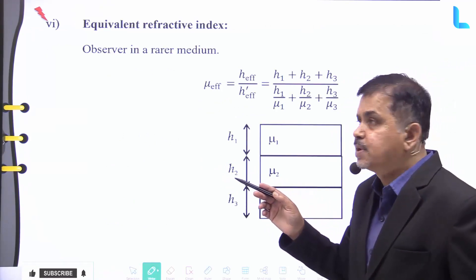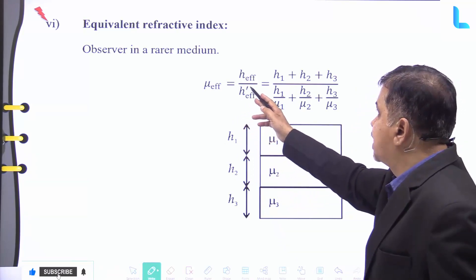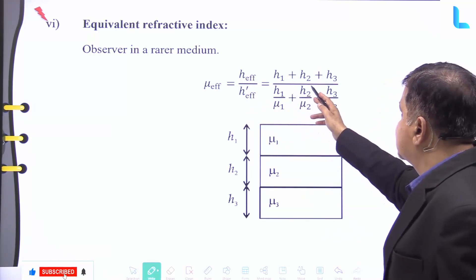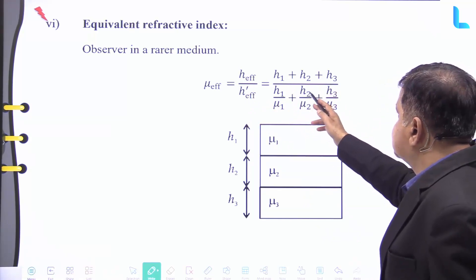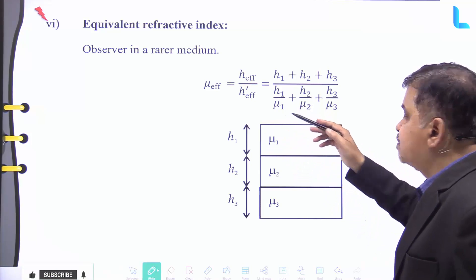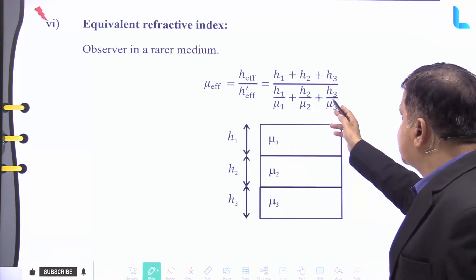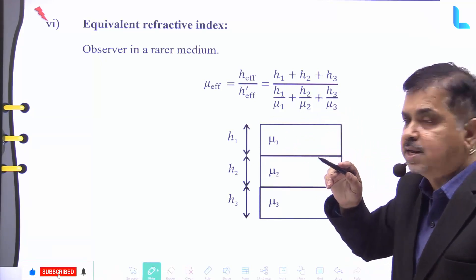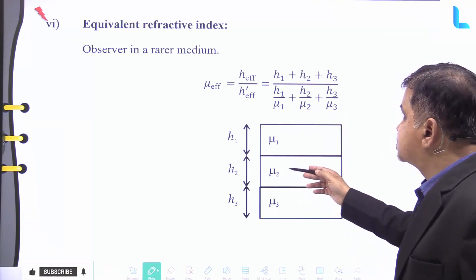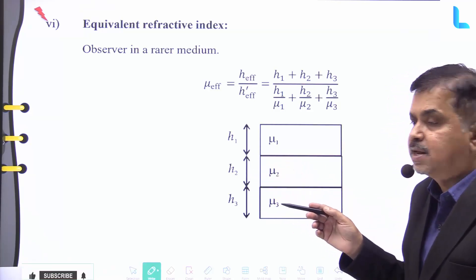The equivalent refractive index for an observer in the rarer medium is: μ_effective = (h₁ + h₂ + h₃) / (h₁/μ₁ + h₂/μ₂ + h₃/μ₃), where μ₁, μ₂, and μ₃ are the refractive indices of different media and h₁, h₂, h₃ are the respective heights.